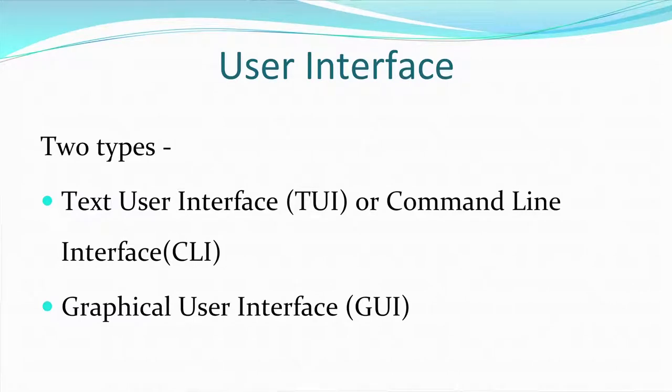Next is the user interface. An operating system acts as an interface between you and your computer hardware. There are two types of user interfaces: the text user interface, also called command line interface, and the graphical user interface. In a text user interface, every command has to be typed at the command prompt, and after pressing the Enter key the respective task is performed. The only means of input is the keyboard.